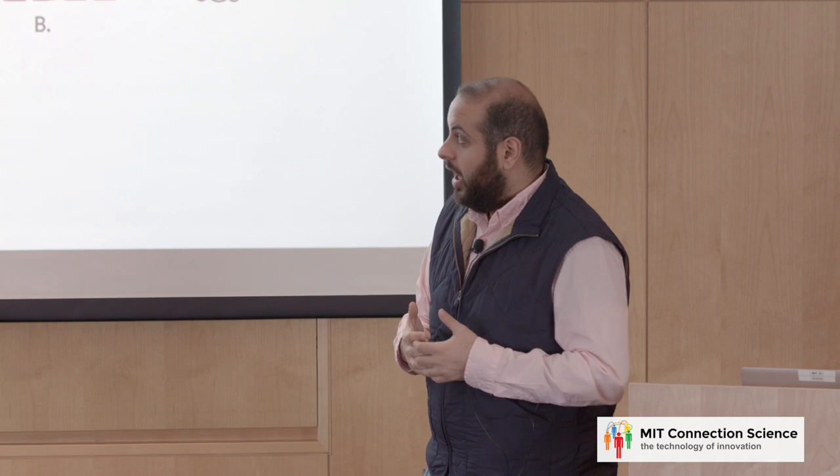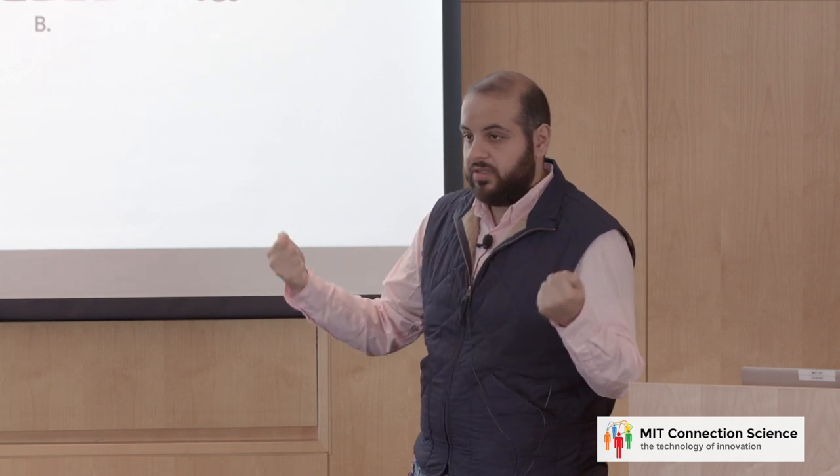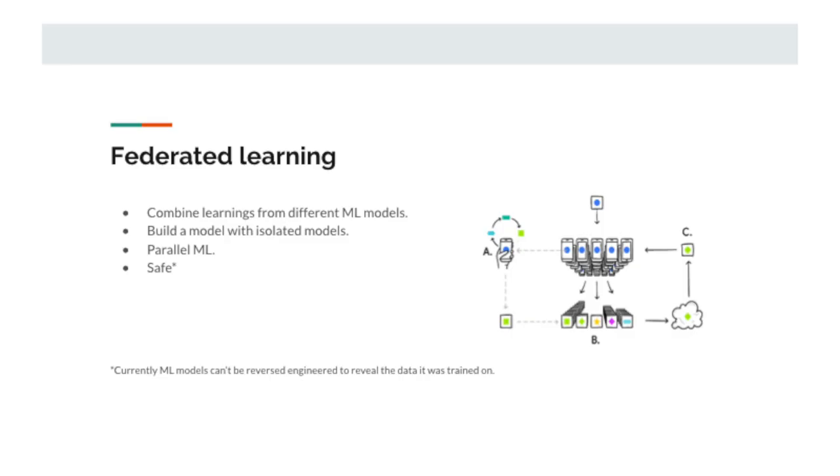Then you aggregate all the hyperparameters, which are the weights from the model. And then you can build a machine learning model. That's parallel machine learning. It's basically safe because when you create a machine learning model, it's really hard to generate the same machine learning without having access to the data set.